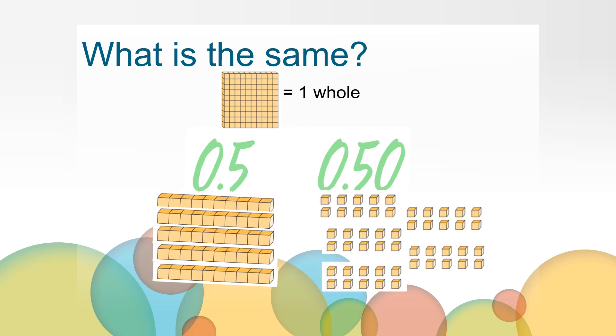The blocks would look like this. Since 10 hundredths equals 1 tenth, I can see that the value of these two numbers is the same. 0 and 5 tenths equals 0 and 50 hundredths.